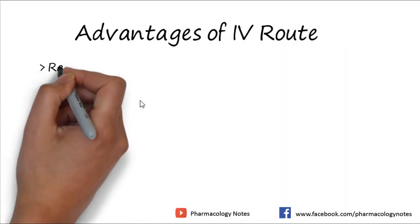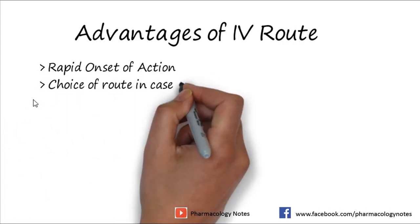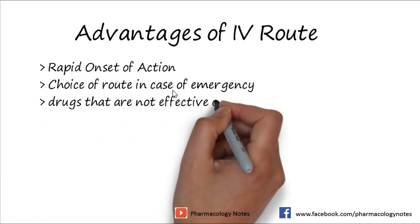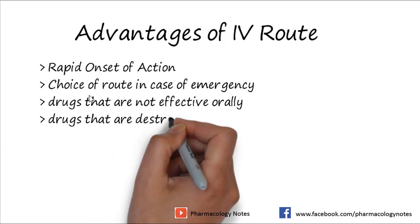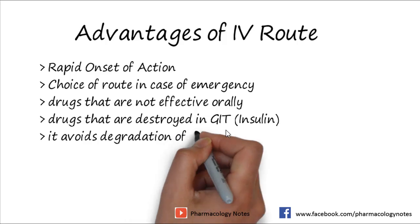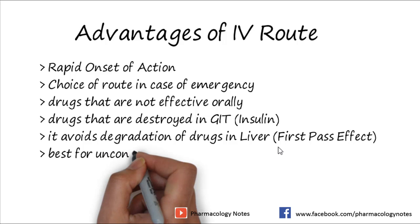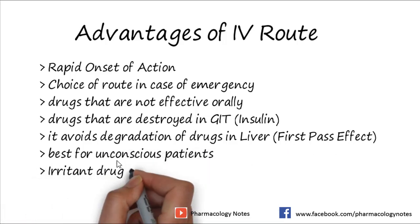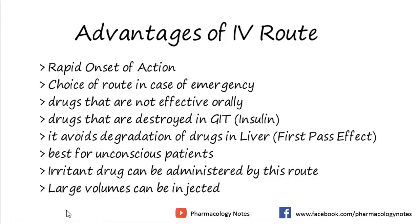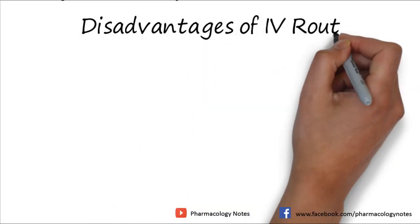The advantages of the IV route include: rapid onset of action; it is the route of choice in emergencies; it is used for drugs that are not effective orally or are destroyed in the GIT, such as insulin; it avoids degradation of drugs in the liver, known as the first-pass effect; it is best for unconscious patients; irritant drugs can be administered by this route; and larger volumes can be injected.